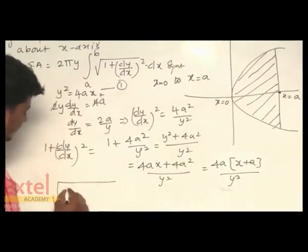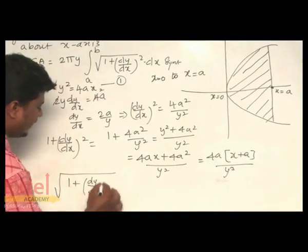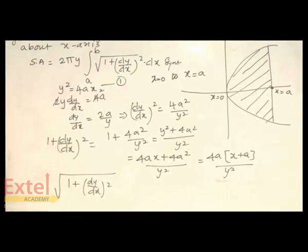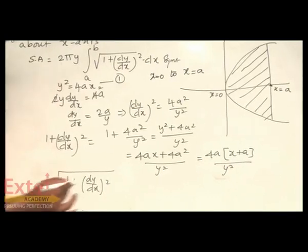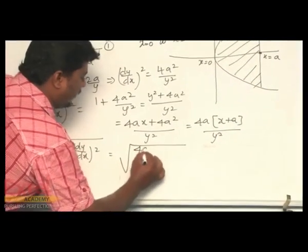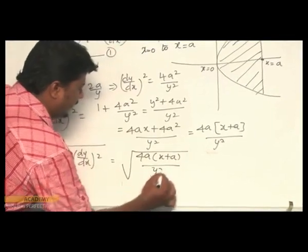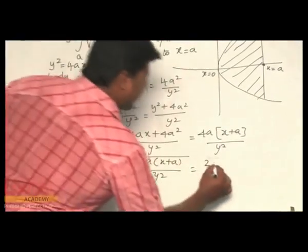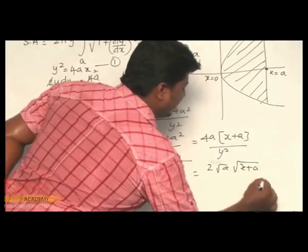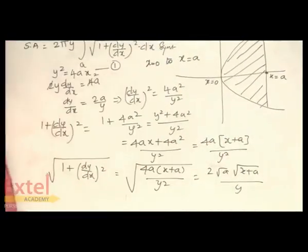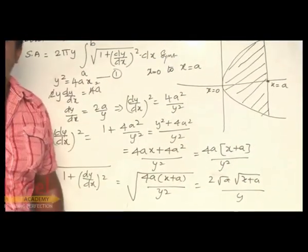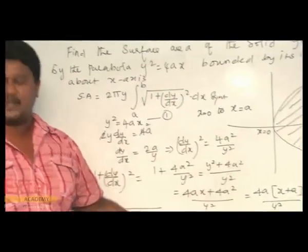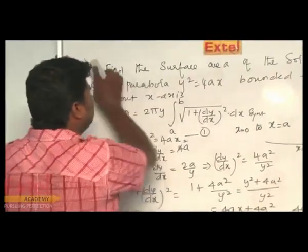Now finding the square root of 1 plus (dy/dx) squared. Taking the square root of 4a(x plus a) over y squared: square root of 4 is 2, square root of a is root a, square root of (x plus a) stays, and square root of y squared is y. So the result is 2 root a times root(x plus a) divided by y.